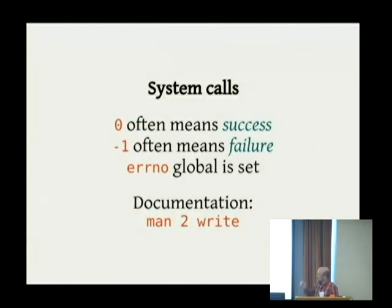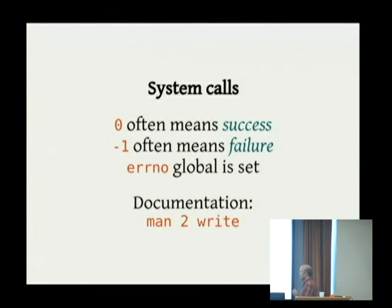When we look at system calls, zero usually means success. Negative one is usually what they return to mean 'I failed.' If they do fail, the C runtime gets the error code they return and stores it in a C global — it might be a thread-local global, but still bad practice nonetheless.